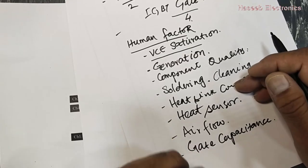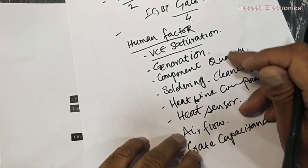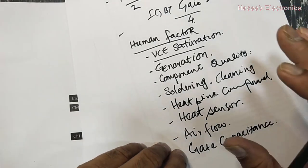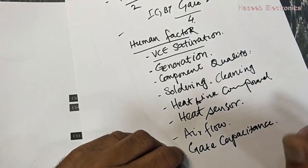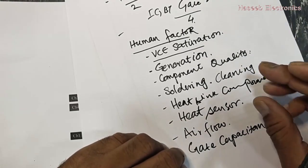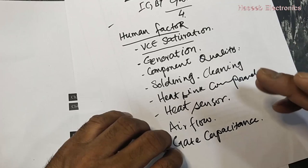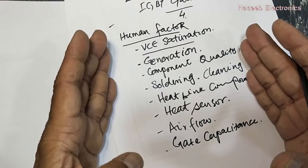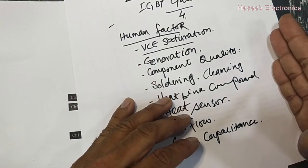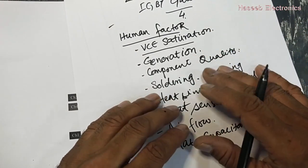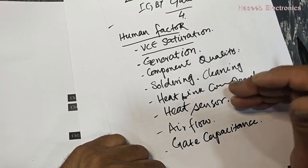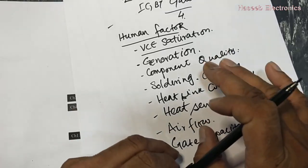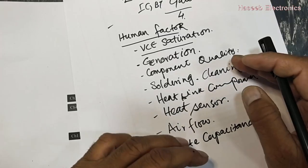To overcome all these issues — gate capacitance, saturation voltage, IGBT generation, component quality — we need to select a best-quality component from reliable sources. We should insist on good quality components, especially in power electronics, because power electronics have no room for second-rate options — it will damage immediately. Friends, I hope this video is informative. If it is, please hit the like button. If you have any questions, let me know in the comment box. Thanks for watching. Assalamu alaikum warahmatullahi wabarakatuh.